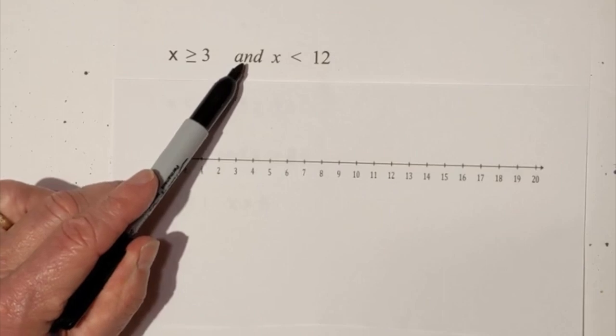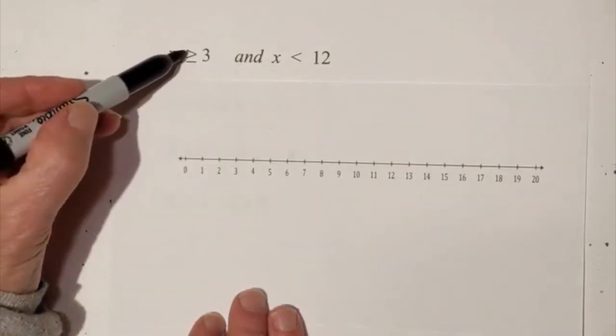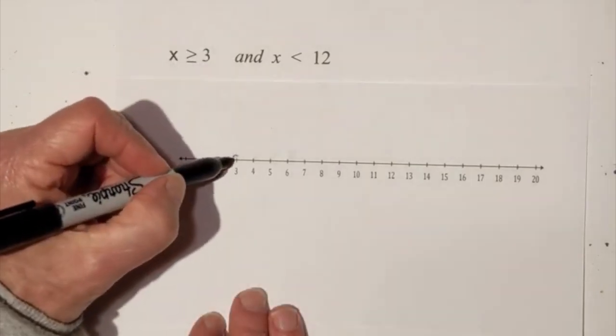First with AND. Just look at the word AND. So first I've got to do it's greater than or equal to 3 so it's going to be closed.